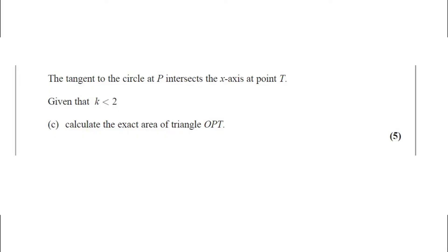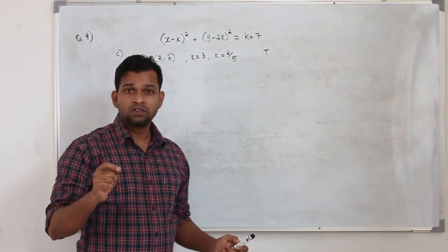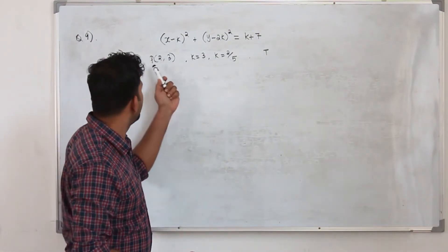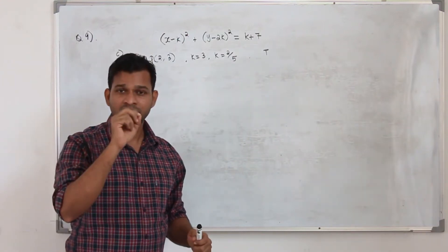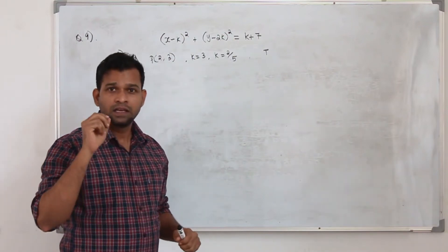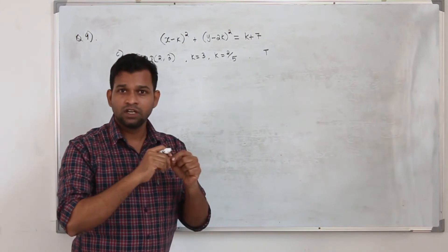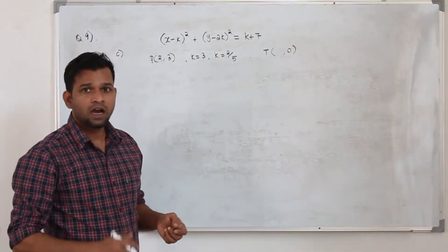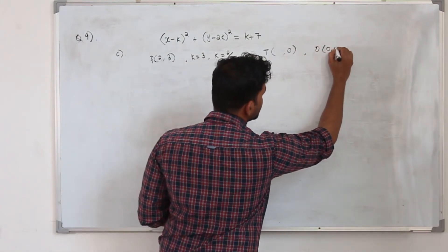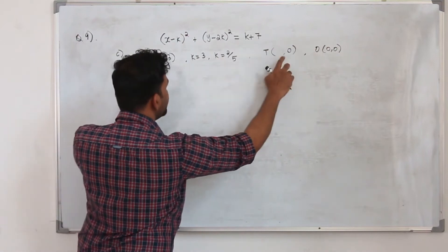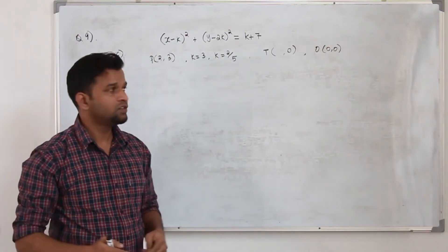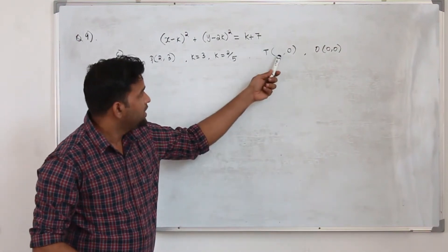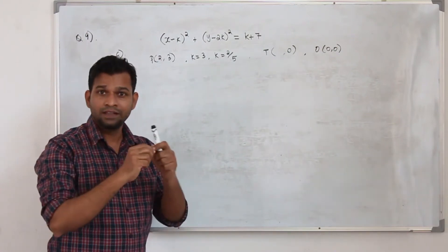Part C: the tangent to the circle at P intersects the x-axis at point T. Given that k is less than 2, calculate the exact area of triangle OPT. The question carries 5 marks. We are going to find the area of triangle OPT. Point P is given, and T is where the tangent at P crosses the x-axis, so the y-coordinate of T will be 0. O is the origin, 0 comma 0. To find the x-coordinate of T, we need to find the equation of the tangent.